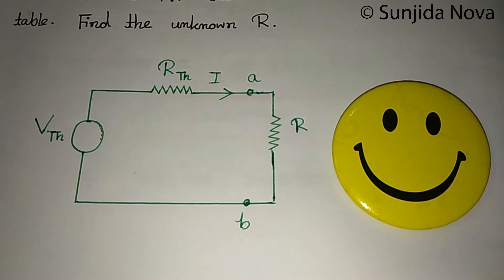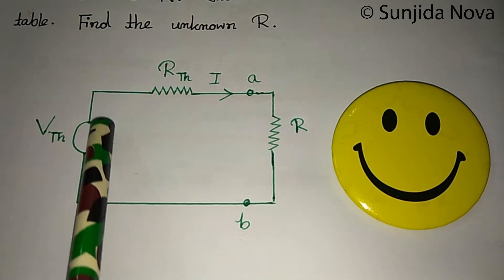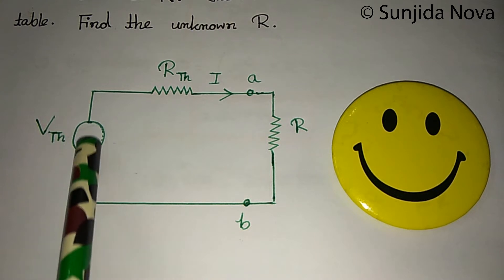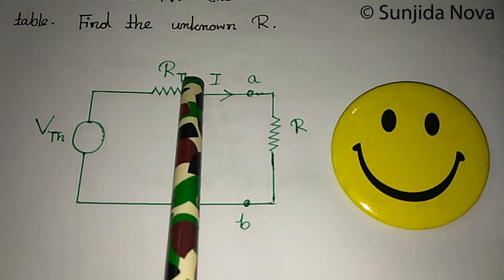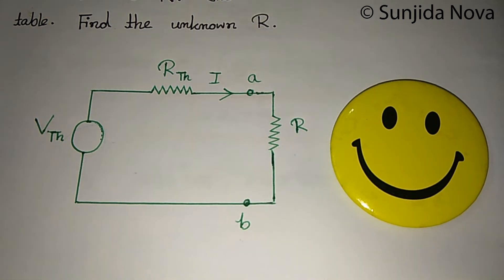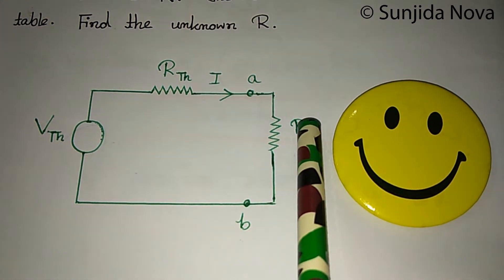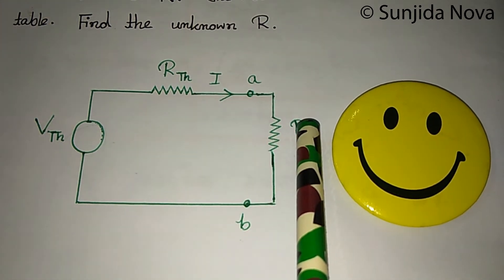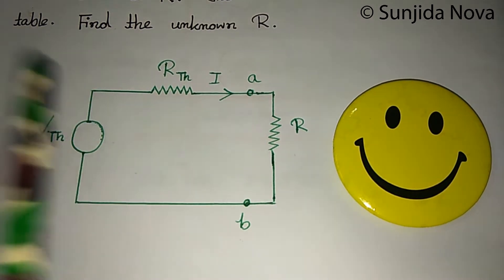We will see that the circuit is replaced by an equivalent circuit. We will see that the voltage source is connected to the resistance and the load resistance is connected to the resistance. We will see that the R value is 10 Ohm and the current value is 2 Ampere.